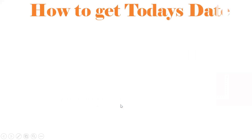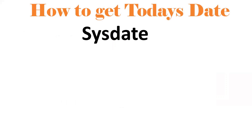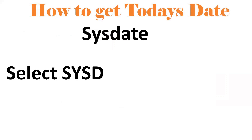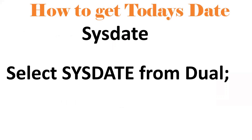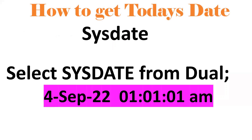Next, how to get today's date — by using SYSDATE. By using SYSDATE, we can get today's date as well as the timestamp. For example, 4th September 2022 01:01:018. It will give you date as well as timestamp.